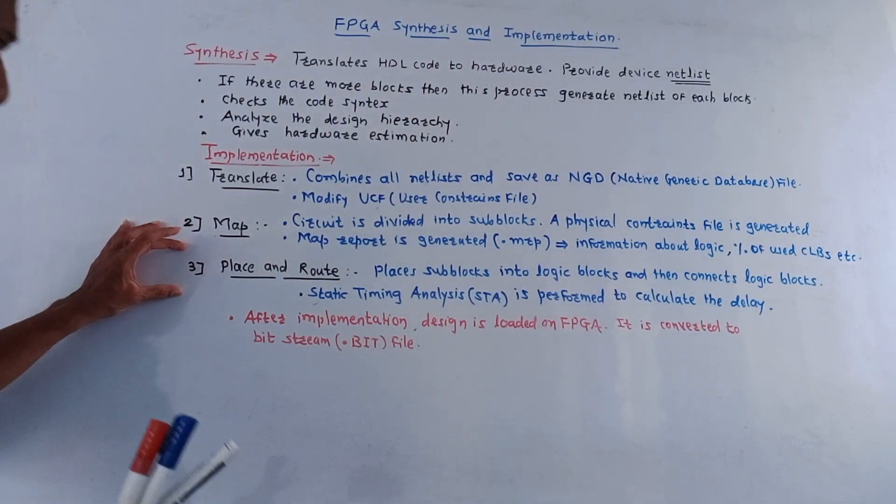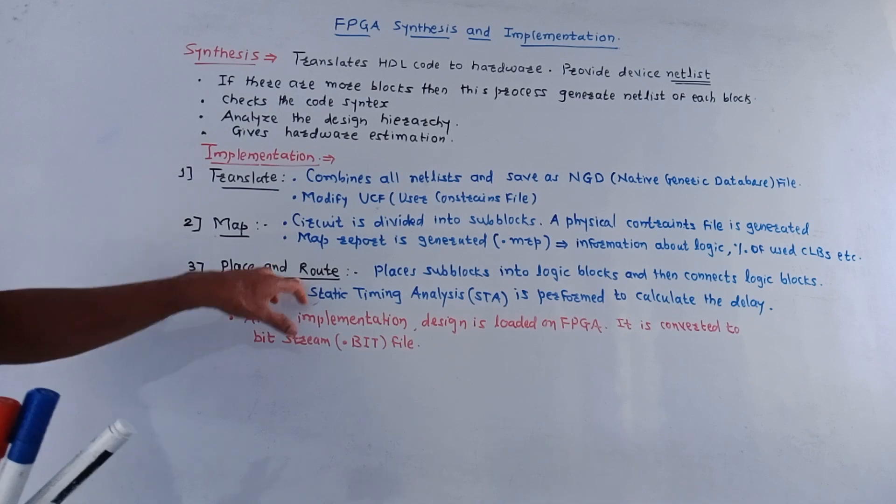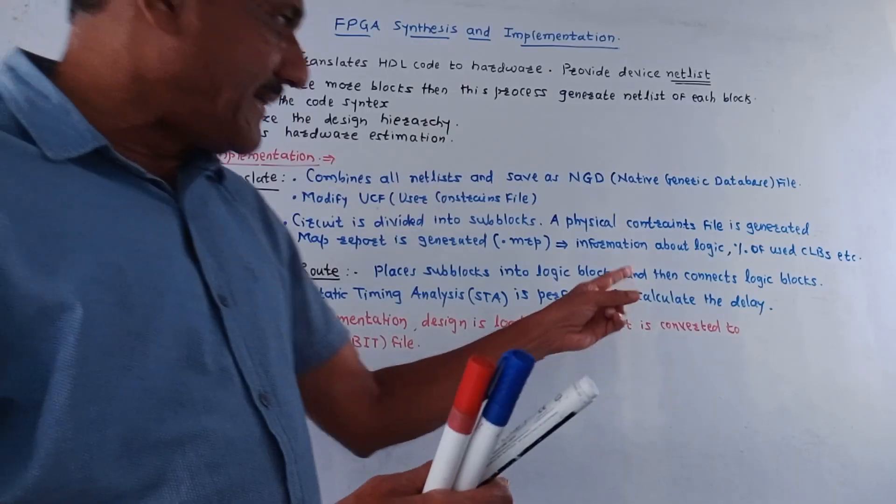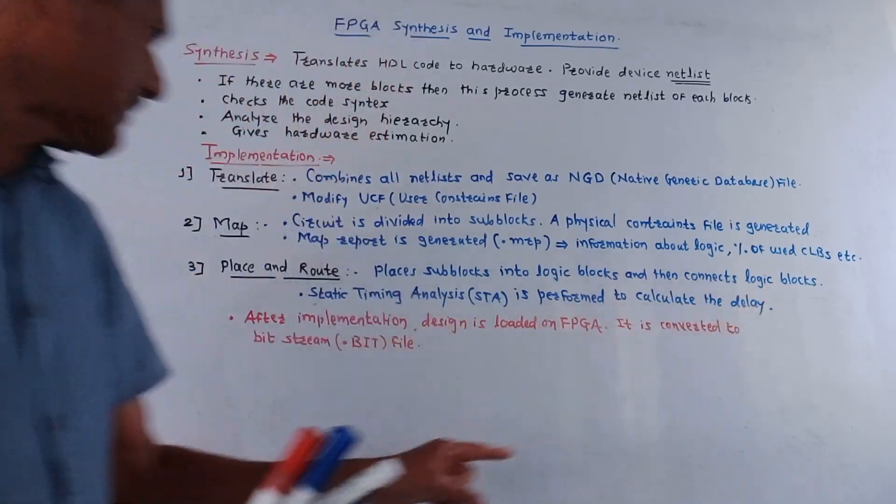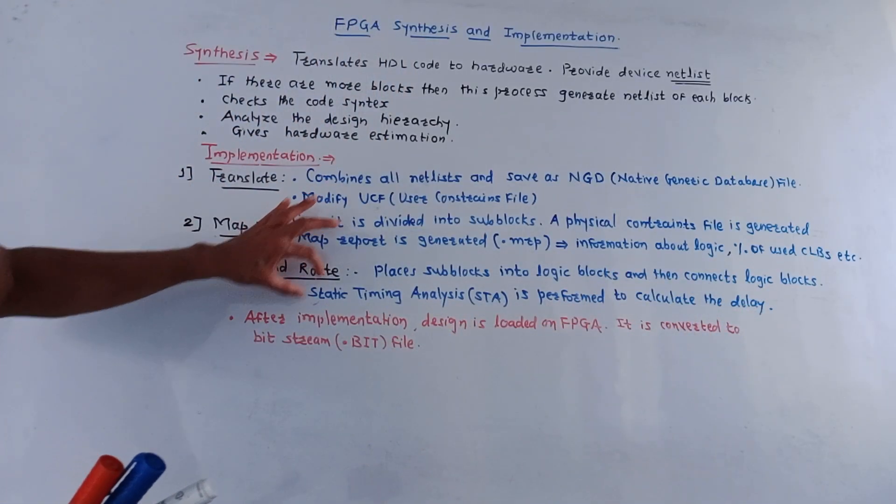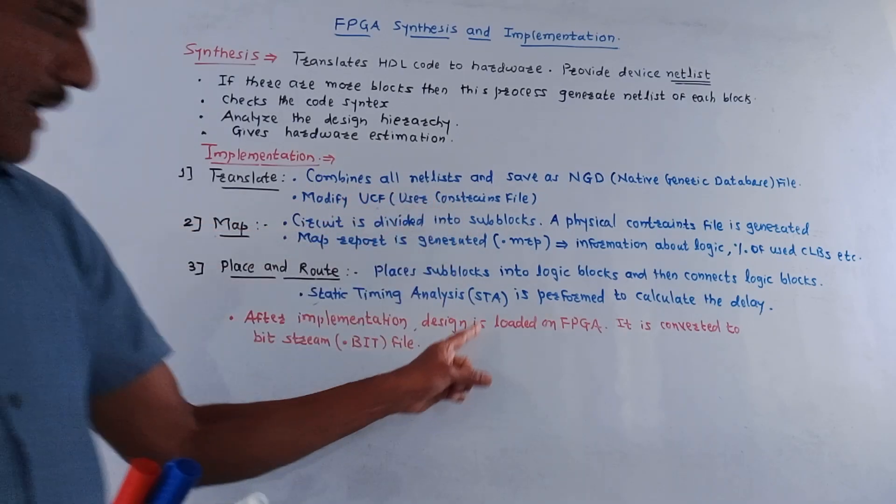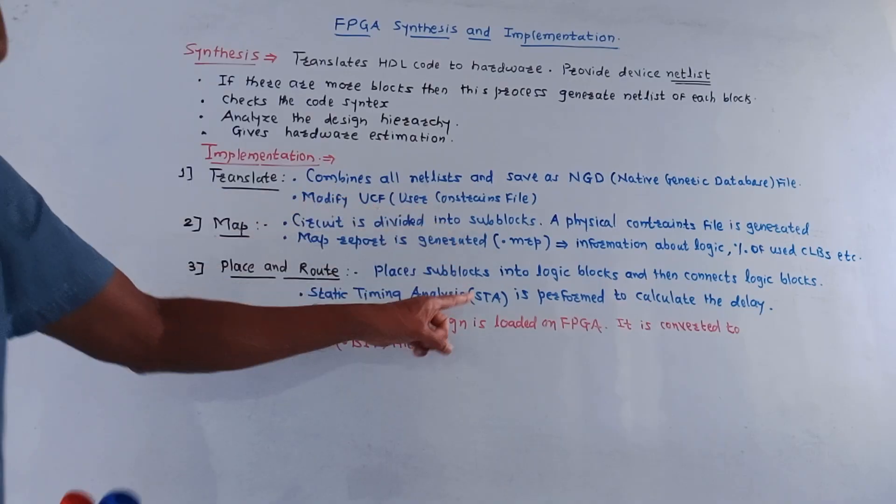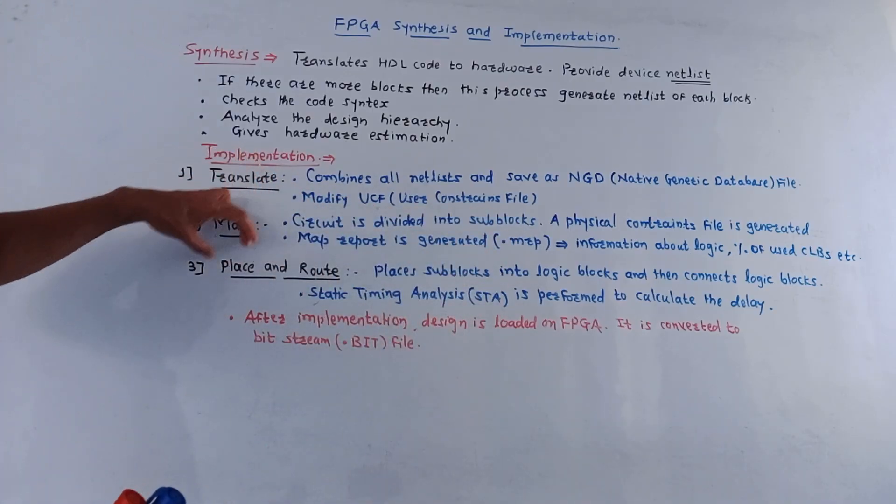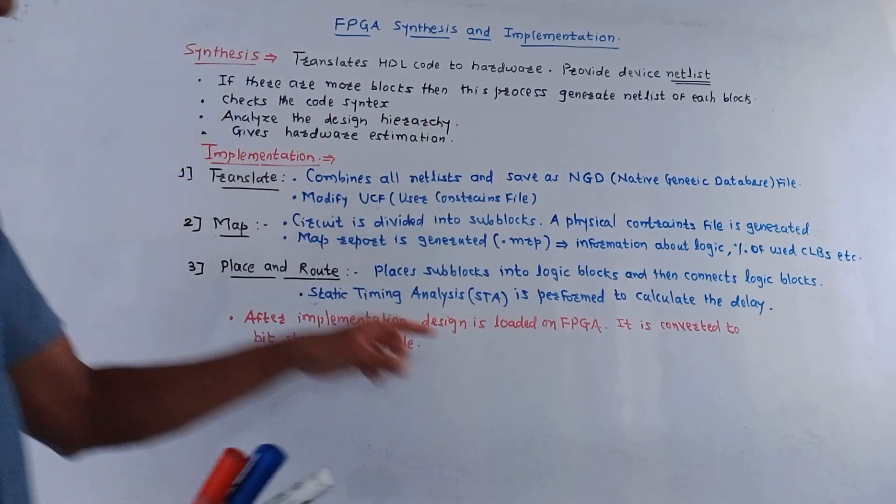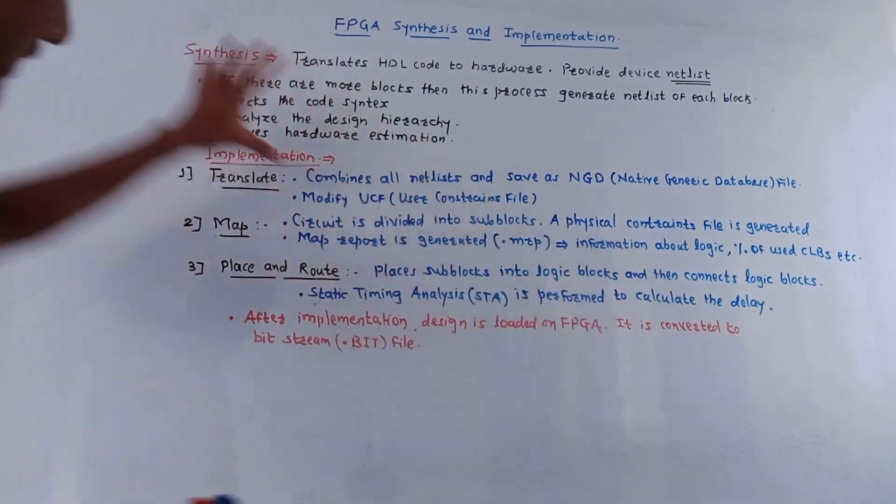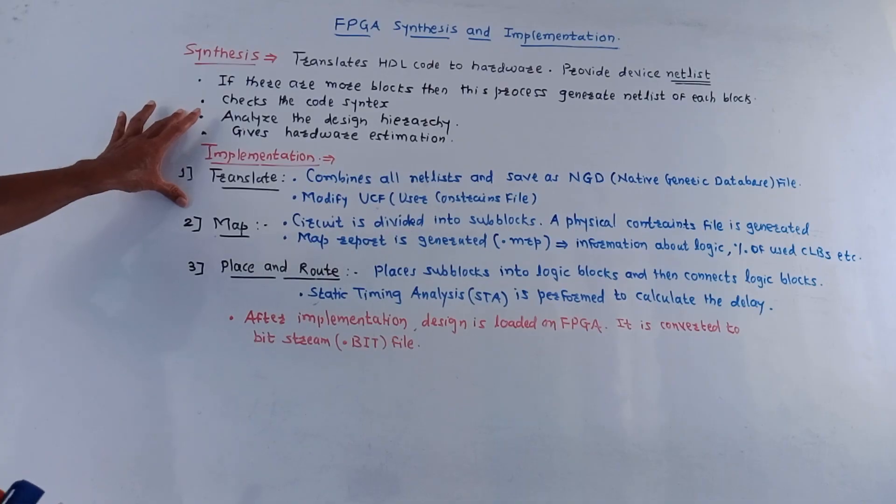Then third step is place and route. As the name indicates it places sub-blocks into the logical blocks and then connects all the logical blocks. The static timing analysis which is abbreviated as STA is performed during place and route process and it is applicable for the calculation of delay. So this is synthesis and implementation process.